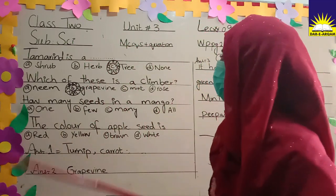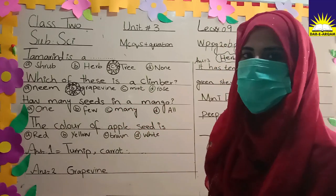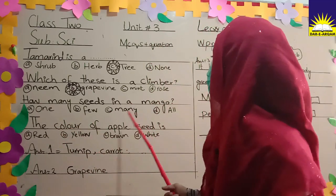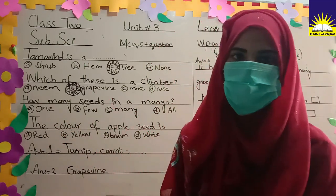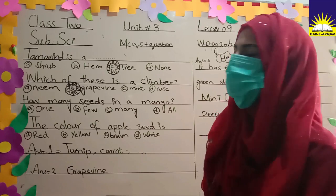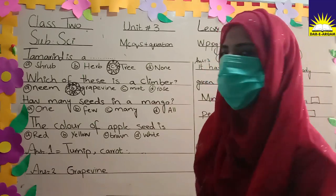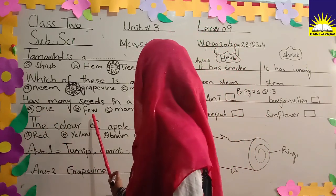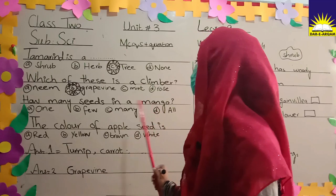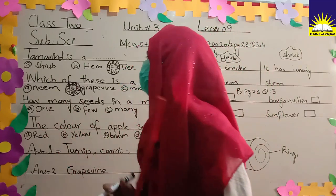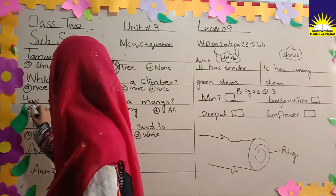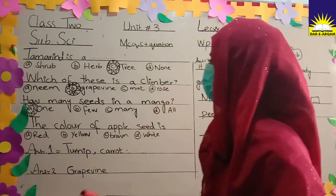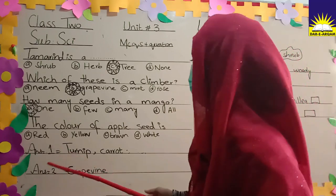Next question: how many seeds are in a mango? We know that there is only one seed in a mango. The options are: one, a few, many, and all. Since there is only one seed in a mango, the right option is one.